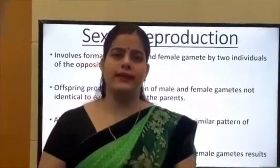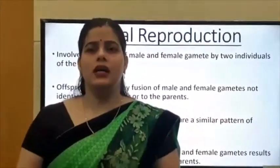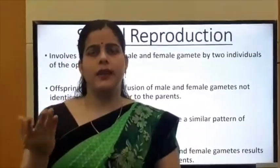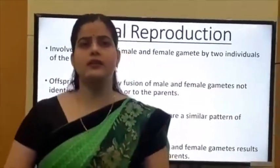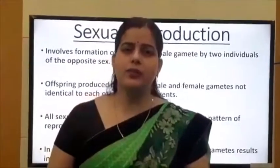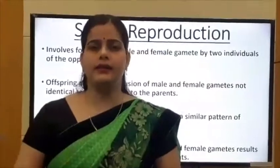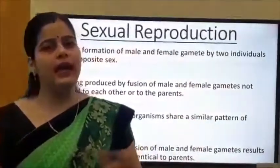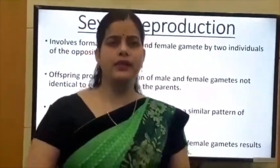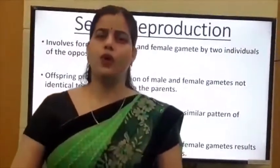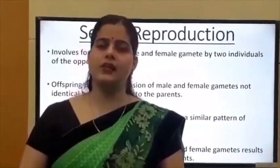After regeneration we discussed vegetative propagation in detail, classified into two major categories: natural and artificial. In natural propagation, plants are formed from vegetative propagules like runners, suckers, and offsets. In artificial vegetative propagation, plants are formed by three methods: cutting, layering, and grafting. Now we will start a new topic — sexual reproduction.